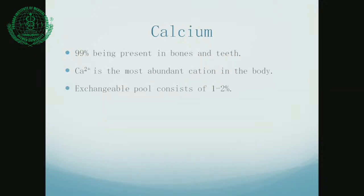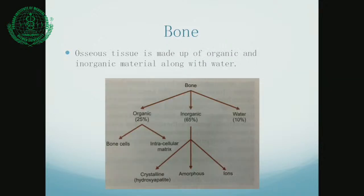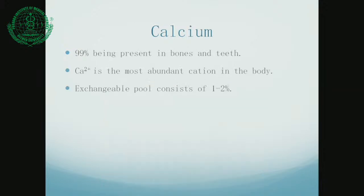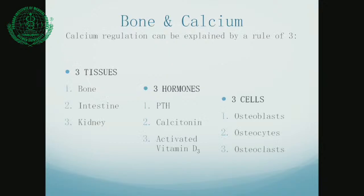99% of the calcium present in the body is present in the bones and the teeth. Calcium ions are the most abundant cations in the body, but out of the 99%, the exchangeable pool of calcium ions is only 1–2%.